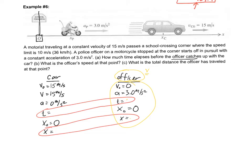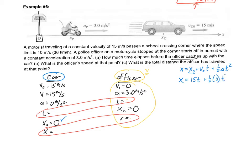I'm going to use: x = x₀ + v₀t + ½at². This includes both t and x without requiring the final velocity. For the car: the initial position is zero, the initial velocity is 15 m/s, and the acceleration is zero — so that last term drops out. The car's equation simplifies to: x = 15t.